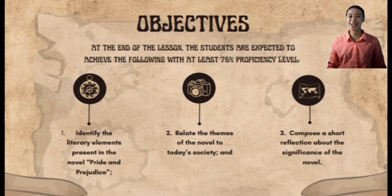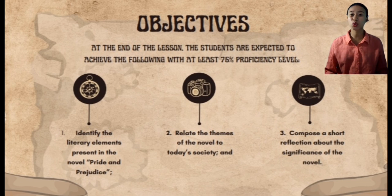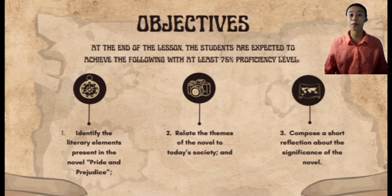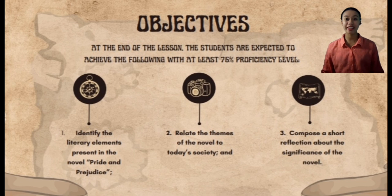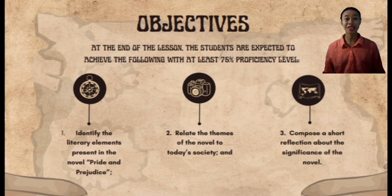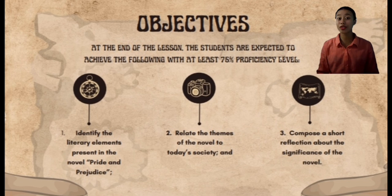Now that you know the meaning of pride and prejudice, allow me to present our objectives for this day. At the end of the lesson, the students are expected to achieve the following with at least 75% proficiency level: identify the literary elements presented in the novel Pride and Prejudice; relate the themes of the novel to today's society; and compose a short reflection about the significance of the novel.